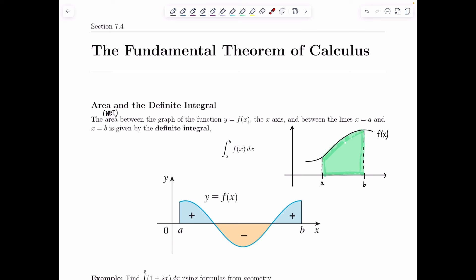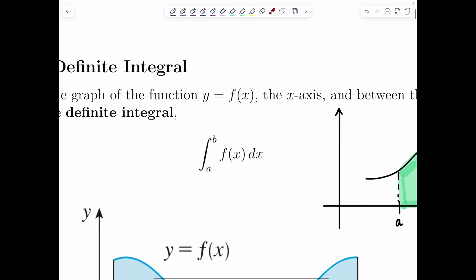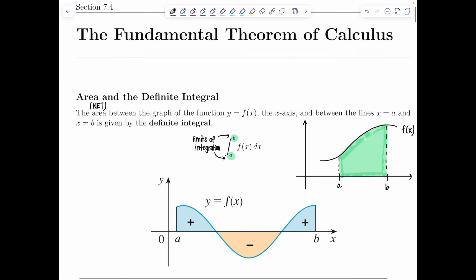The net area between the graph of the function y equals f of x, the x-axis, and between the lines x equals a and x equals b is given by the following definite integral. What makes this integral definite is that we now have limits of integration — a and b are called our limits of integration. The fundamental theorem tells us that this net area is given by the value of this definite integral.